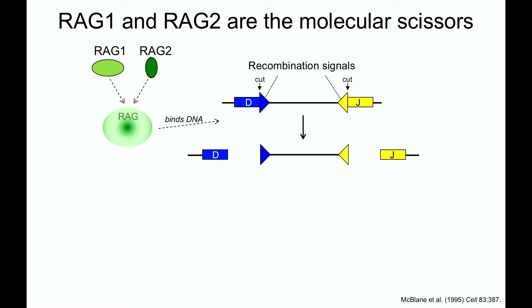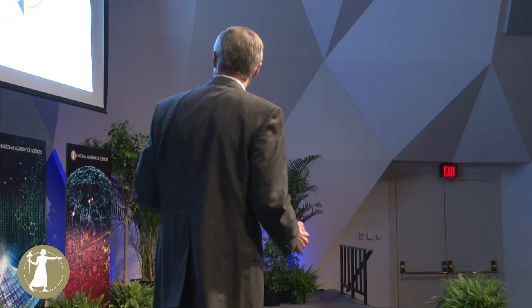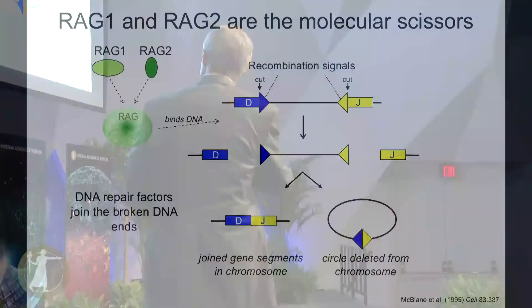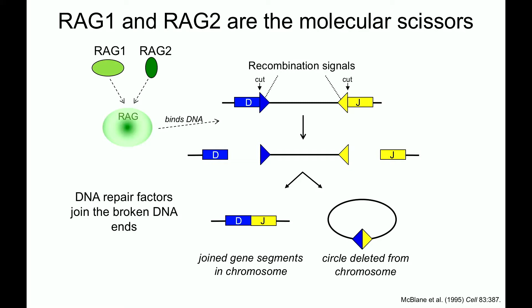RAG is then pretty much done — it's done its job. The molecular scissors hands the reaction over to DNA repair factors that stick the ends back together again. The V's, D's, and J's are assembled in the chromosome to make the antibody gene, and the recombination signals are joined on a circle that's tossed out of the chromosome and eventually lost from the cell.